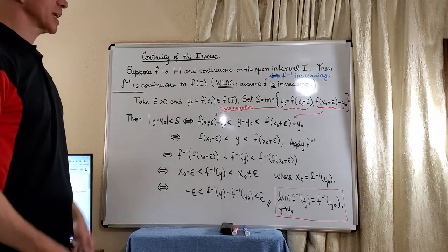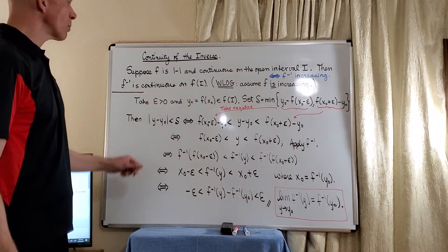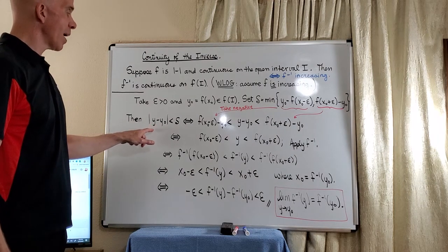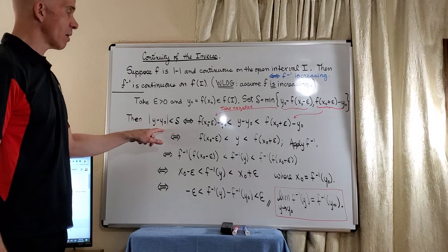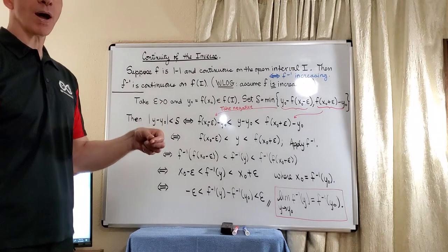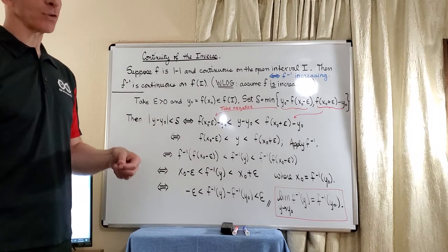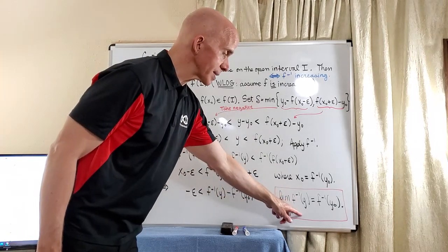Now how do we start the epsilon-delta proof? What we want to say is that if y is really close to y-naught, then f inverse of y is very close to f inverse of y-naught. Basically, we want to show this.